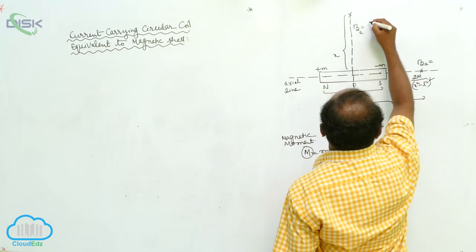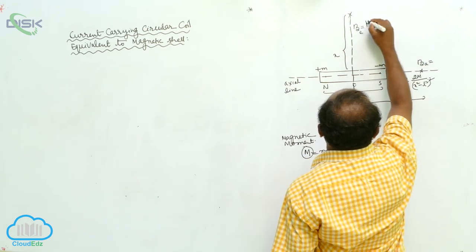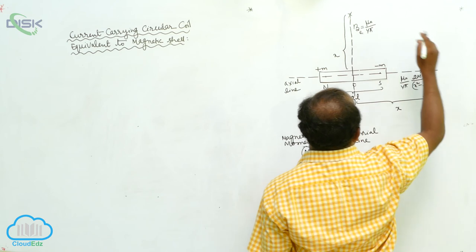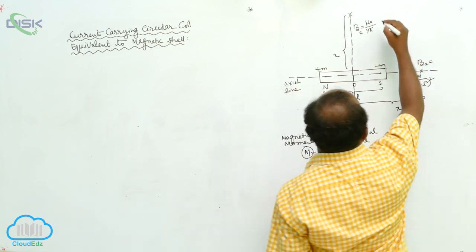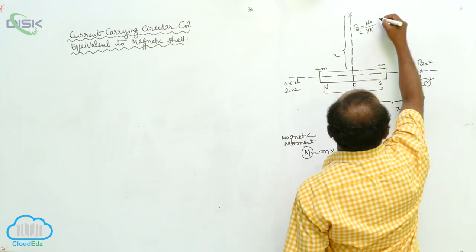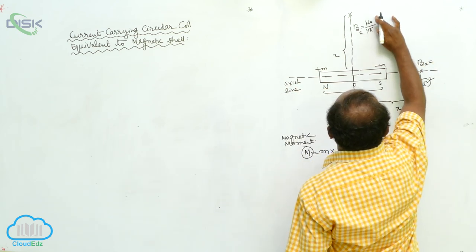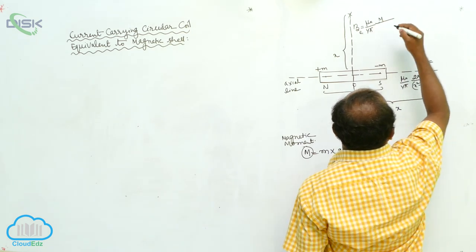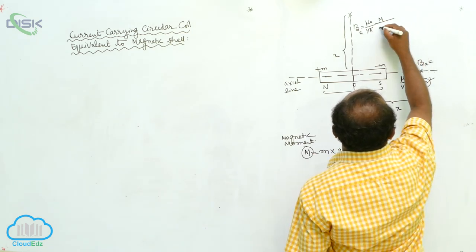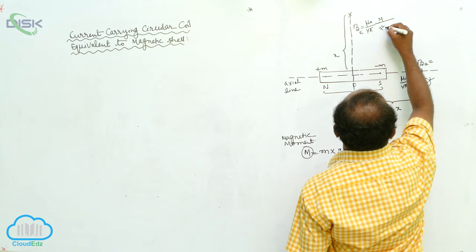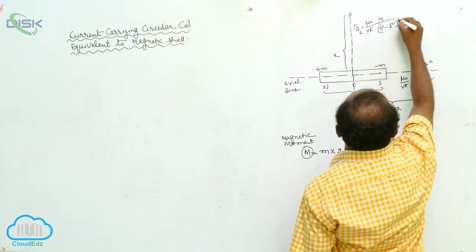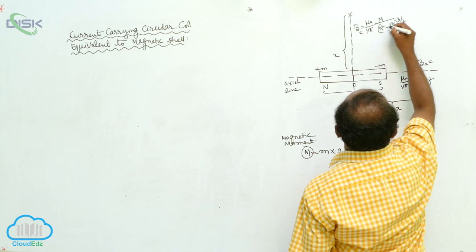On the perpendicular bisector line, BE equals mu naught by 4 pi, into M divided by (X squared minus L squared) to the power of 3 by 2.